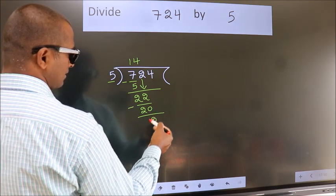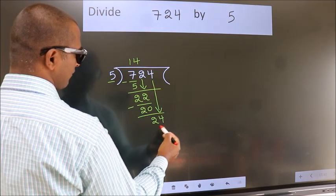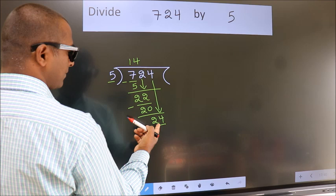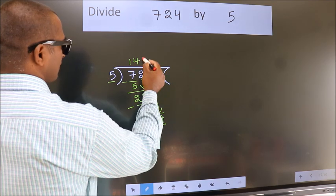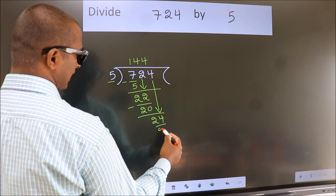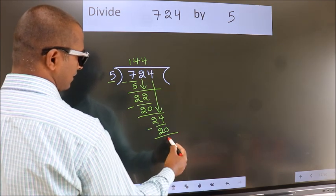After this, bring down the beside number. So, 4 down. So, 24. A number close to 24 in 5 table is 5 times 4 is 20. Now, we subtract. We get 4.